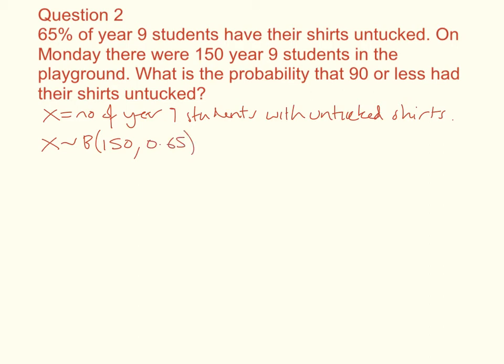Now, 0.65 is close enough to 0.5, and 150 is a large value for n. So we can say that x is approximately y, where y has a normal distribution of 150 times 0.65. That's going to give us the mean, which is 97.5, and the variance is going to be 34.125.